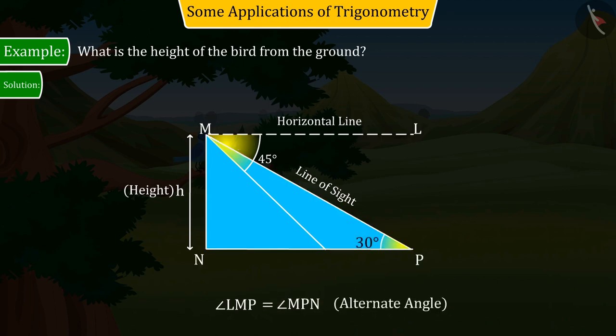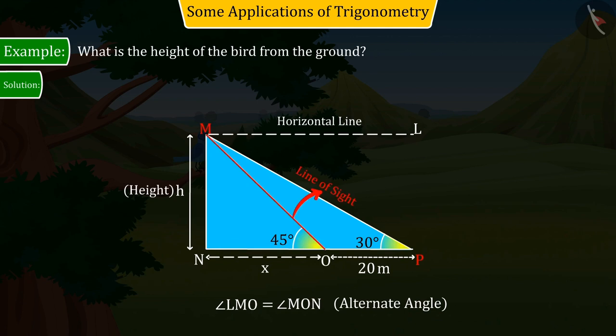In the second case, when the rat travels 20 meters towards the tree, the angle of depression becomes 45 degrees, assuming the distance from point O to N is X meters, where the angle of depression formed by the line of sight and horizontal line is 45 degrees. Therefore, in both situations, the following figure is obtained.